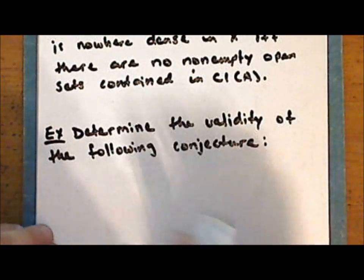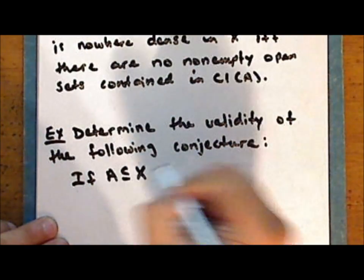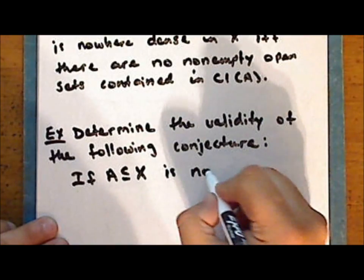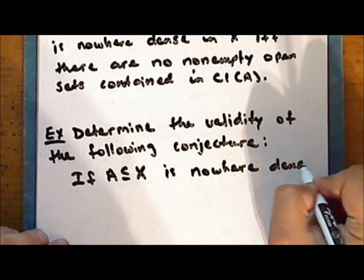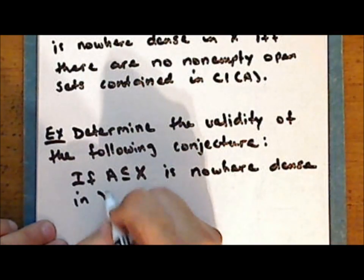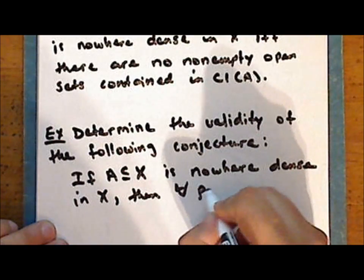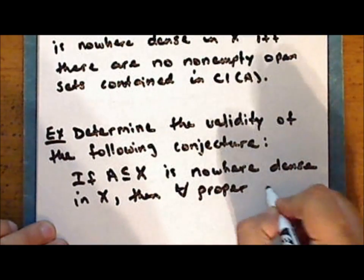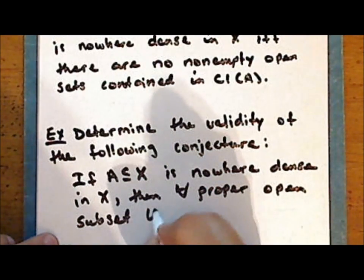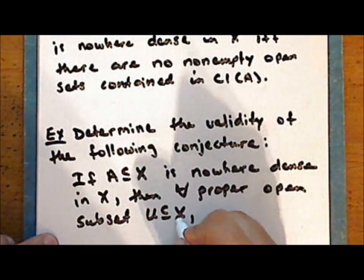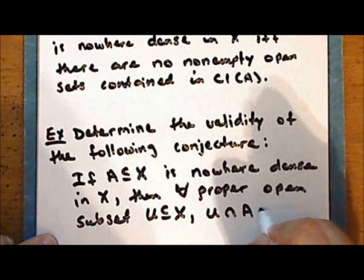The conjecture is: if A is a subset of X and that subset is nowhere dense in the space, then for every proper open subset U of X, the intersection of that open set with the set A is empty.